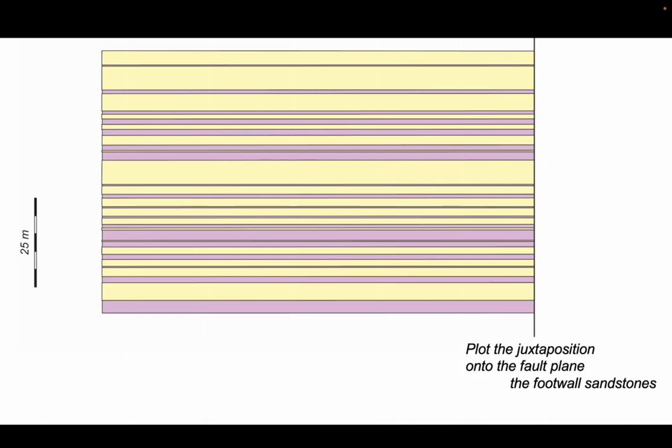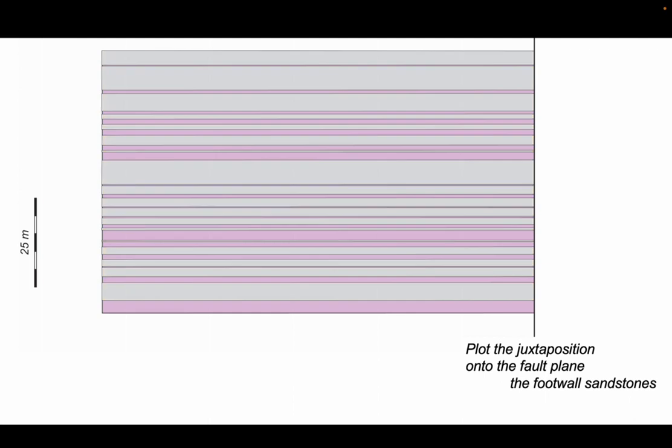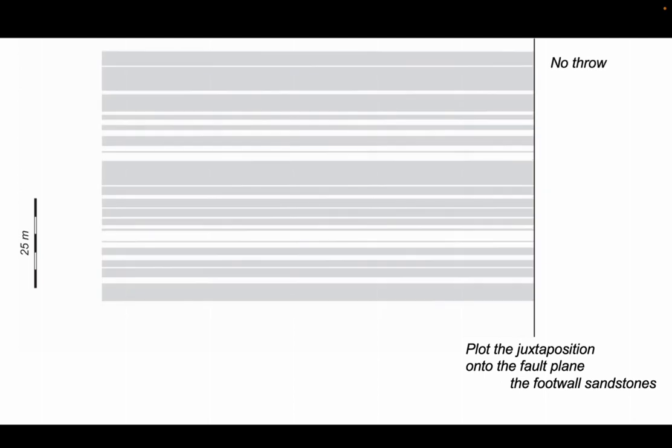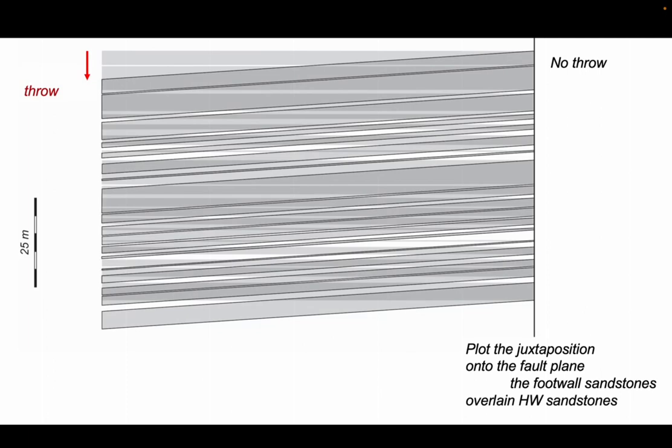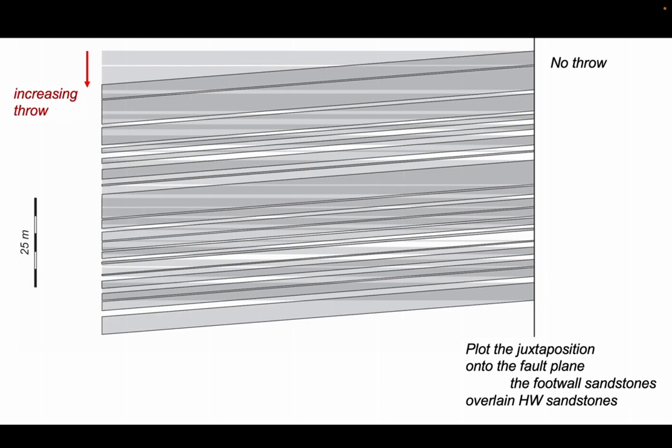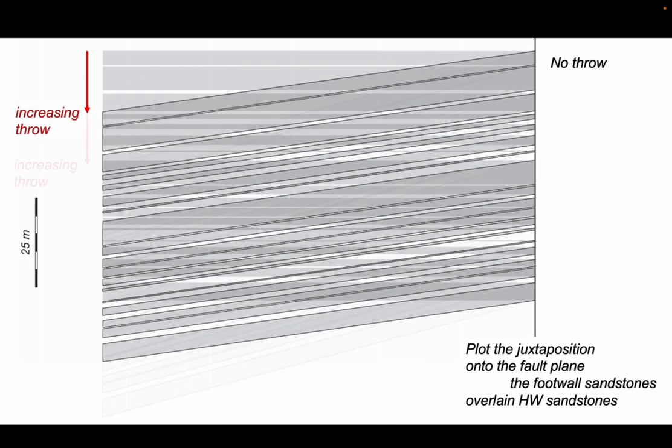So here's the fault plane view. Looking into the footwall, just highlight the sandstones on that side of the fault. And this is before throw. Let's put the hanging wall in and add some throw on the left-hand side of our diagram. There we go. There's a bit of throw. And we can see where there's juxtaposition created. The gray tone is enhanced. And again, and again, and again.